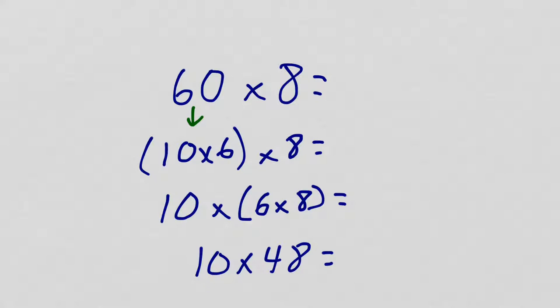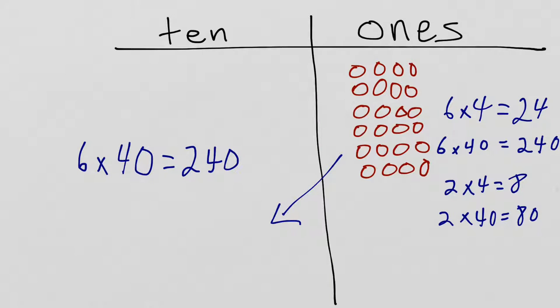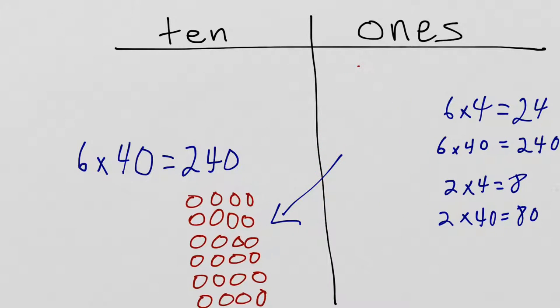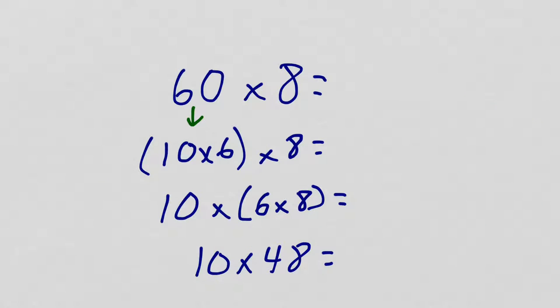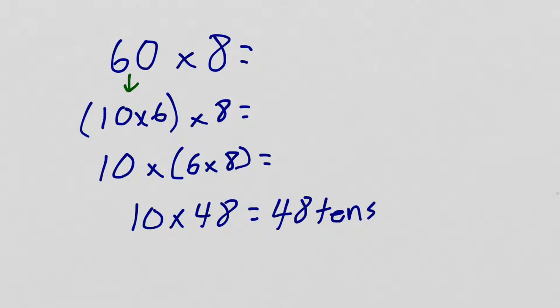Now, 10 times 48, when we multiply by 10, what we're doing is changing 1s into 10s like we did back here. So, I took these 1s, and I shifted them over into the 10s place. So, each one of those that was a 1 is now a 10. So, back here, I have 48 10s when I multiply by 10. Now, 48 10s is 480.